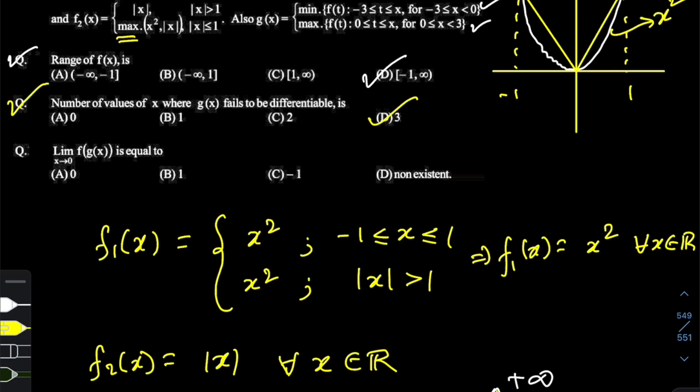I'm leaving it to my viewers to answer the third question. The third question asks: what is the limit of f(g(x)) as x approaches zero? The options are zero, one, minus one, or non-existent. Please do comment in the comment section what you think the answer is. Thank you so much for watching — please do like, subscribe, and share.